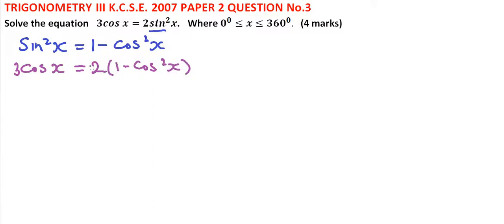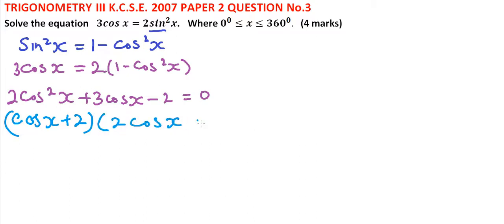When you rearrange the equation, you end up with a quadratic equation: 2 cos squared x plus 3 cos x minus 2 equals 0. This is a quadratic equation and you factorize it. You end up with cos x plus 2, and we have 2 cos x minus 1 equals 0.